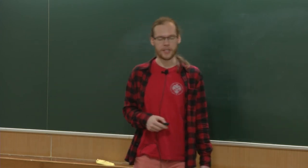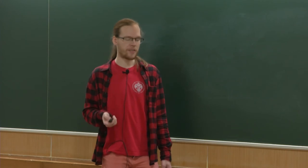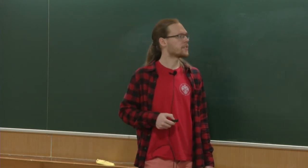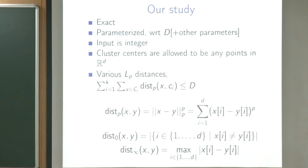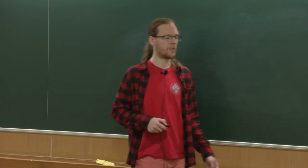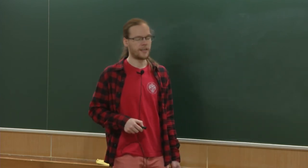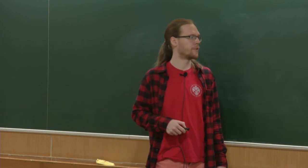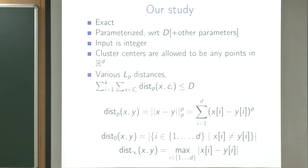We studied the problem with respect to various distances. We consider distances of the form dist_p, where dist_p is the p-th power of the p-norm of the vector. We also consider the special cases of distance p=0 — the L0 norm, or Hamming norm, which is the number of coordinates where the points differ — and distance p=∞, the L∞ norm, which is the maximum coordinate difference. L0 and L∞ are the two limit cases.